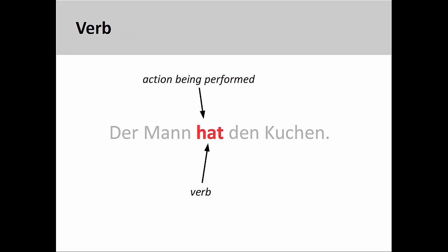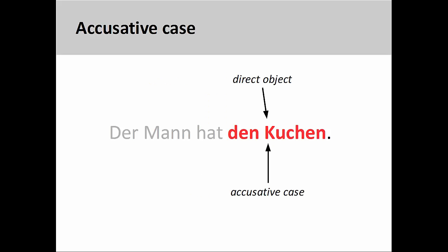And the action that the man is performing is the act of having or possessing something. This, however, raises a question: what does he have? What person or thing receives the action of being possessed? And that is what the accusative case tells us here. The direct object expressed by the accusative case shows us who the recipient of the action is. Here, the recipient is den Kuchen, the cake.